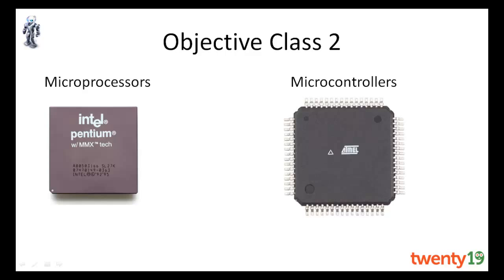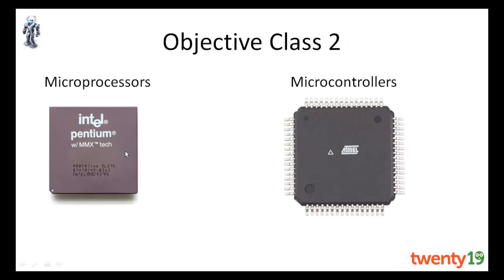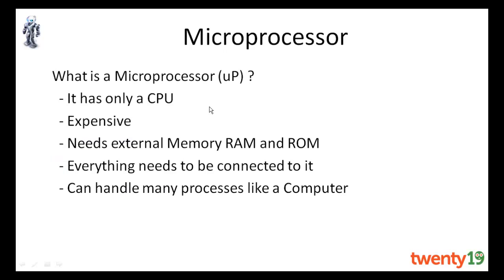We will see first what is a microprocessor. A microprocessor actually only has a CPU — a Central Processing Unit. It contains only the ALU (Arithmetic Logic Unit) and some registers. These registers are like variables that we use to store data. The CPU is on-chip, meaning it is present inside the chip itself.